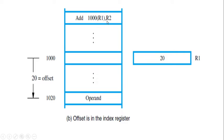Similarly, here we have ADD 10000(R1), R2. First move to R1, fetch the value 20 stored there. Add the constant 10000 with the register content of R1 and generate the effective address 10020. Move to that location, add the operand value with the content of register R2, and the resultant value after addition is stored in register R2.